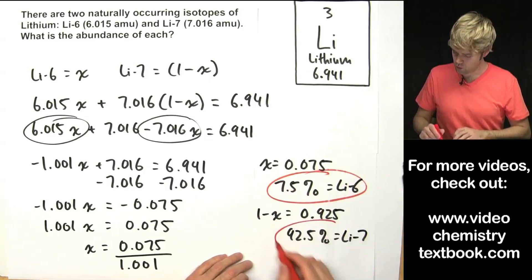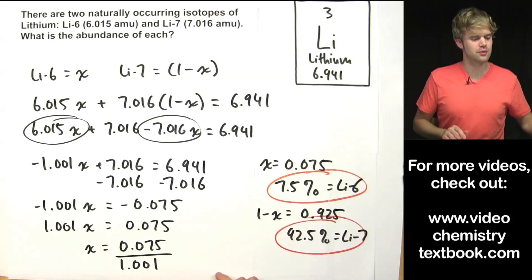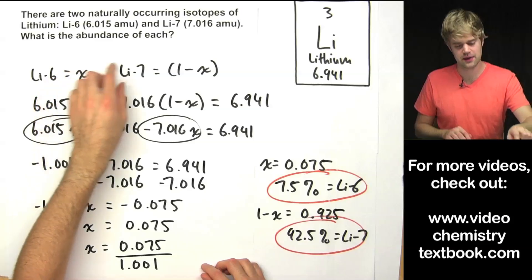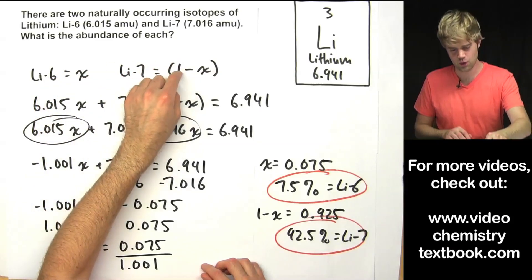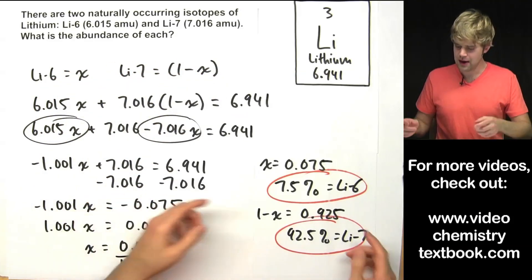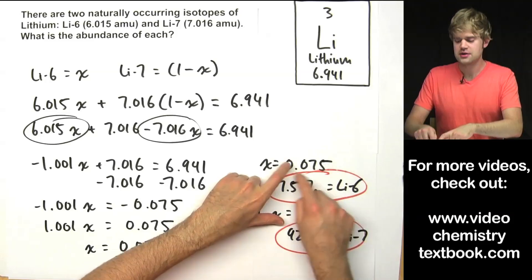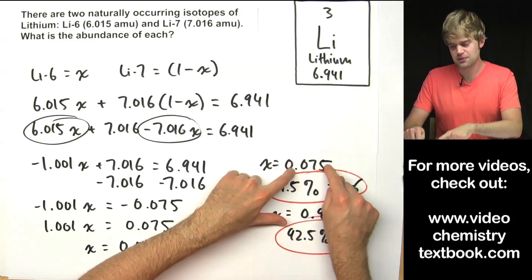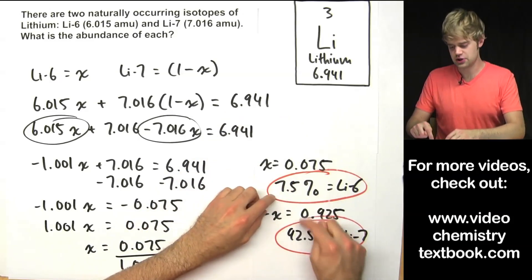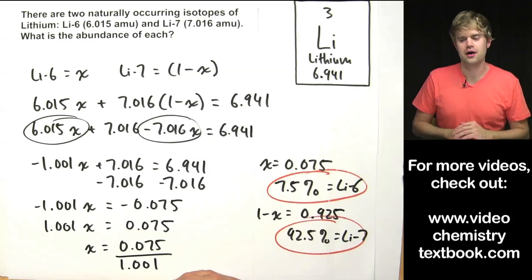So once again the only really tricky thing is setting one isotope equal to x and the other to 1 minus x. Then you work through the math, and remember to take the decimals you get at the end and turn them into percentages by multiplying by 100.